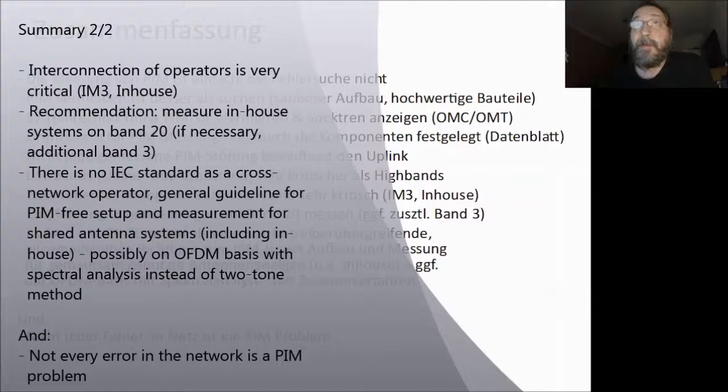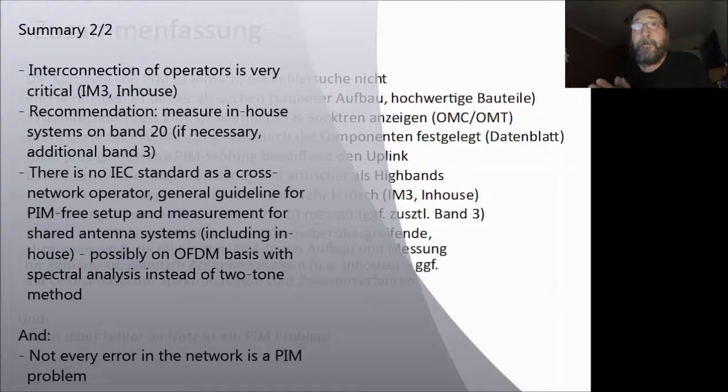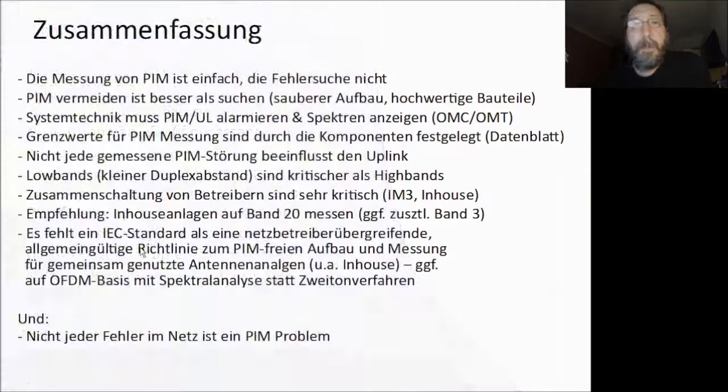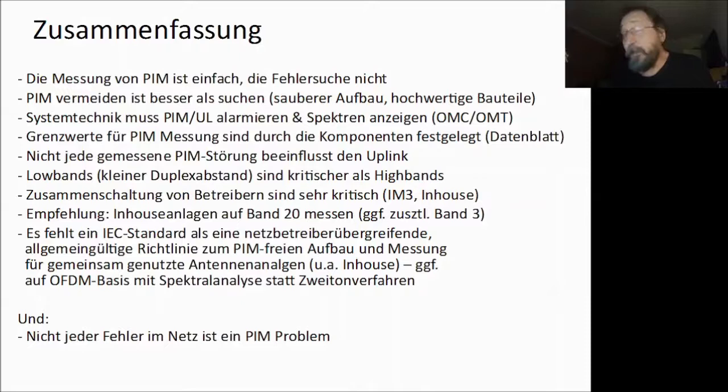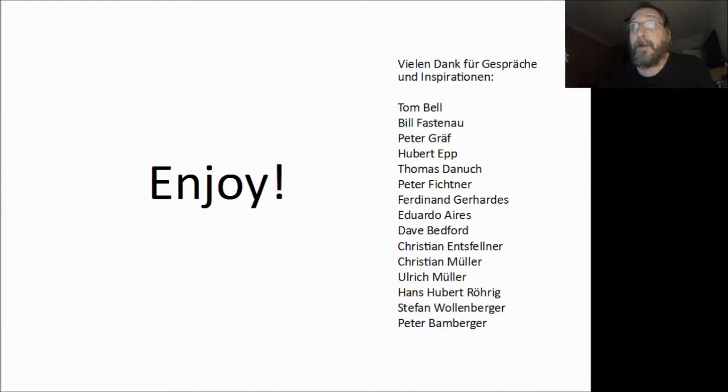If you combine different providers on one antenna it's critical, and more critical in in-house systems. In-house systems should be measured on Band 20 — that's my recommendation. There is an IEC standard missing — a global recommendation for planning, installing, and measuring in-house systems. And not every problem in the network is a PIM problem. Many thanks for inspirations to various people.